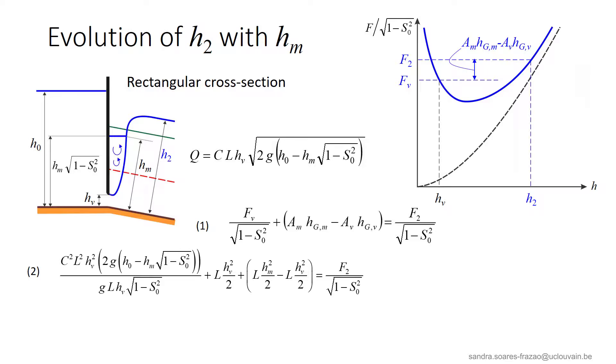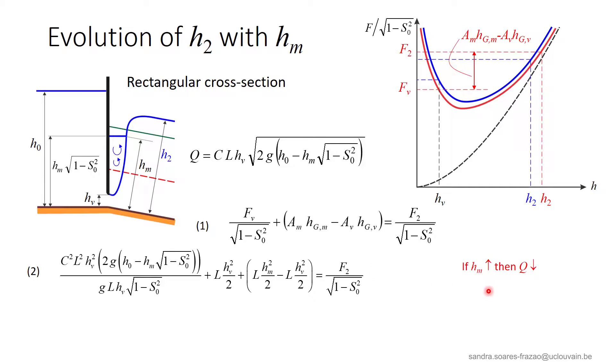Let us describe the link between the discharge Q, the depth in the roller area HM, and the downstream depth H2. The specific force equation can be written as in equation 1, or after developing FV, considering a rectangular cross-section as in equation 2.